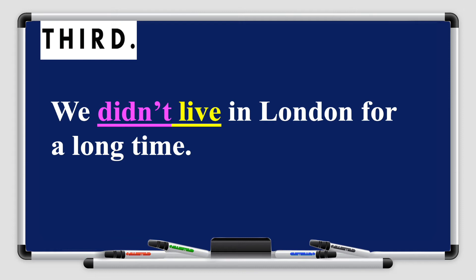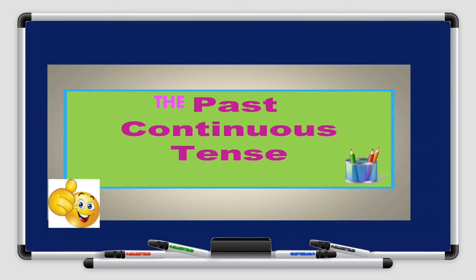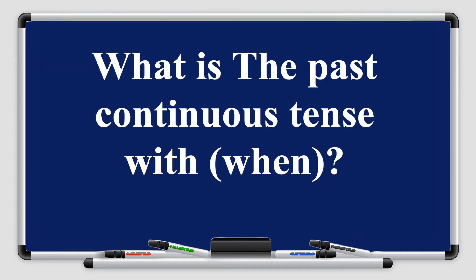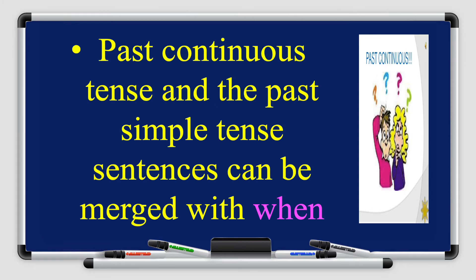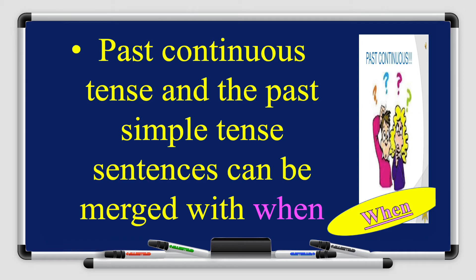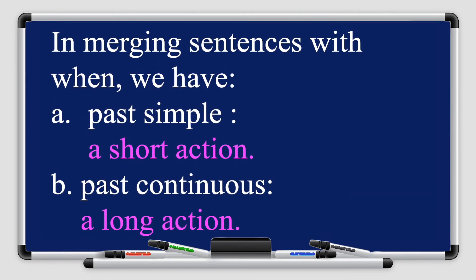Now let's learn about the past continuous tense with 'when.' The past continuous tense is used to describe a continuous action or state that was happening in the past. The past continuous and the past simple tense can be merged together using 'when.' In merging sentences with 'when,' we have the past simple tense for a short action and the past continuous tense for a long action. The past simple is a completed action; the past continuous is an action in progress.